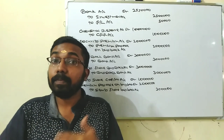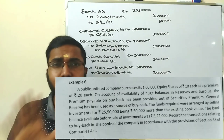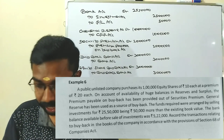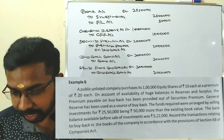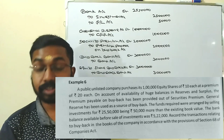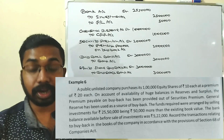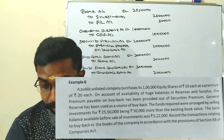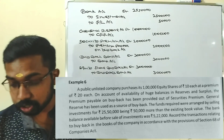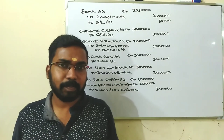Profit is P&L credit, loss is P&L debit. Bank balance available before sale of investment is Rs.5,22,000. Record the transaction relating to buyback in the books of the company in accordance with the provisions of Section 68 of the Companies Act.